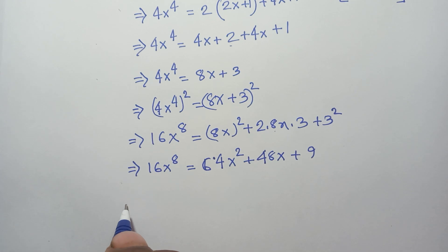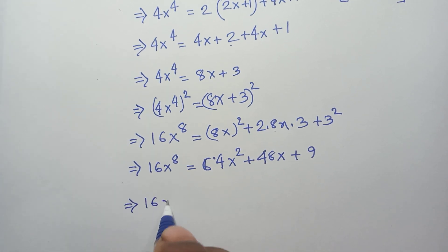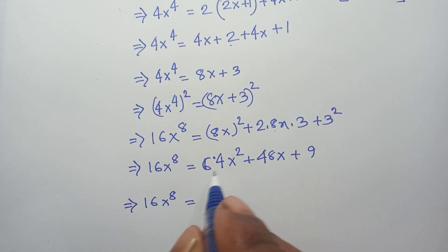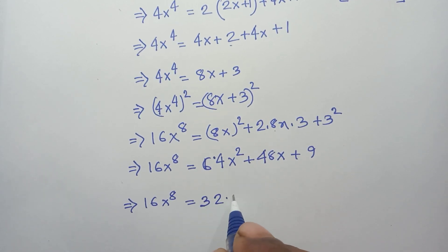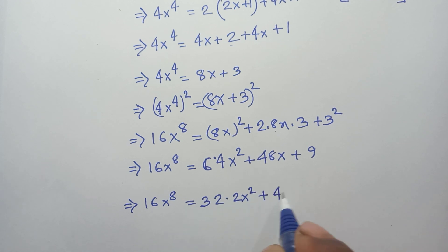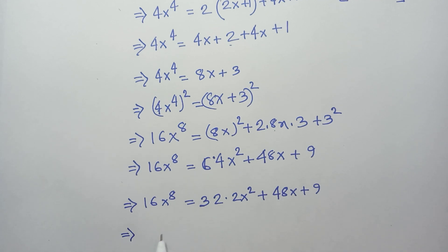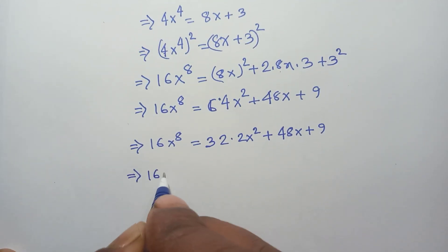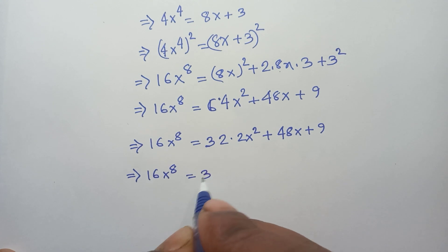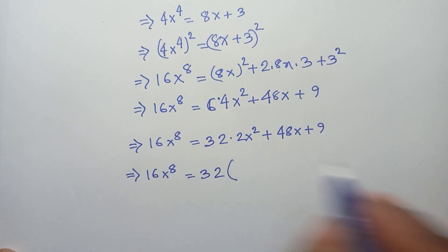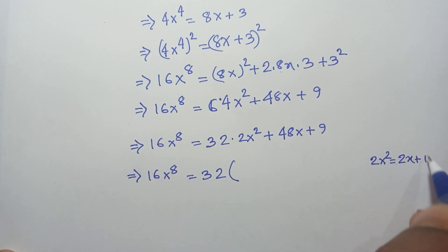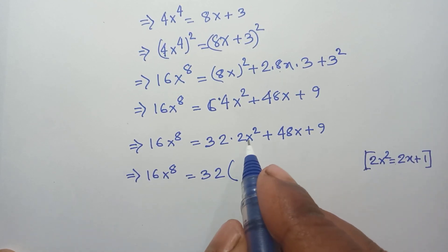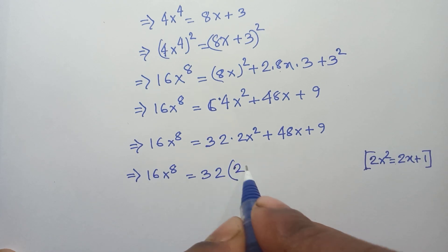Next, 16x⁸ = 64x² + 48x + 9. We write 64x² = 32·(2x²), and substitute 2x² = 2x + 1, giving 32(2x + 1) + 48x + 9 = 64x + 32 + 48x + 9.